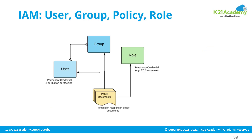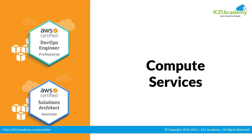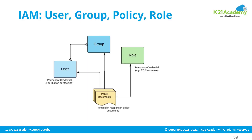There is a many-to-many relationship between users and groups. Policies, which govern permissions, can be applied to a user, a group, or a role. A role can in turn be applied to a user or a group. That's the relationship between users, groups, policies, and roles.